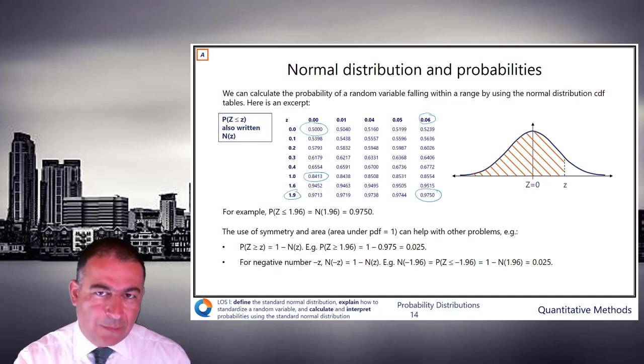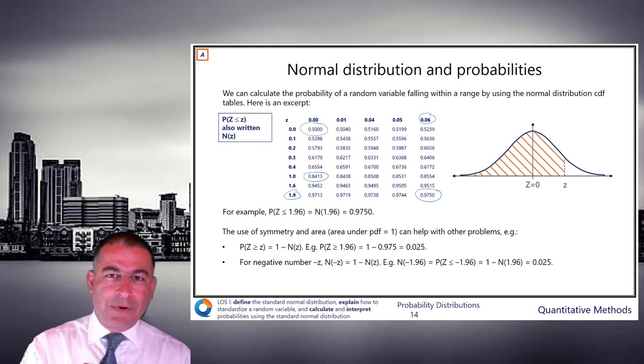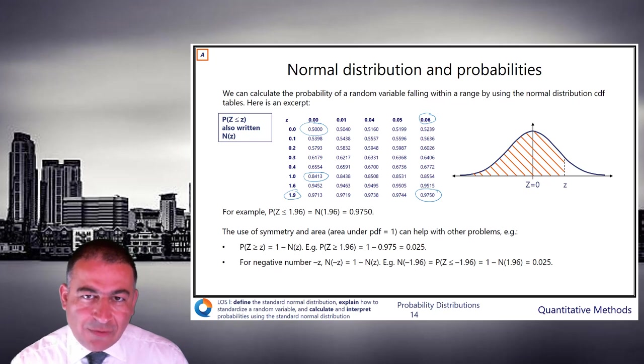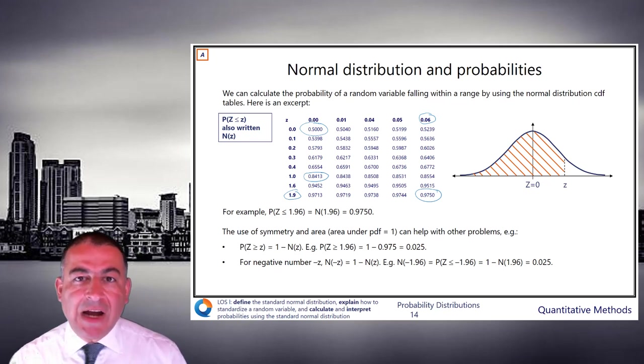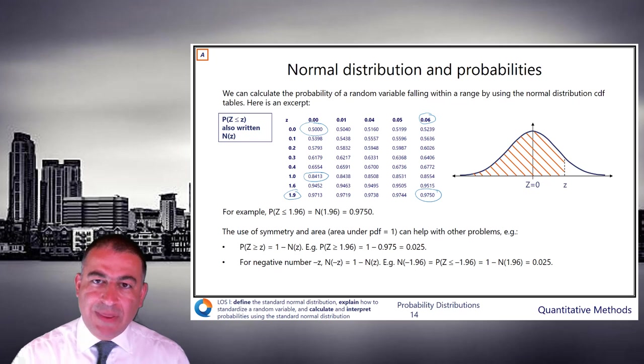Hopefully, you're going to say 95%. The probability that we're less than 1.645. Probability that we're less than 1.645 is 0 to 1.645. Remember, that's 45% plus the entire 50% to the left.